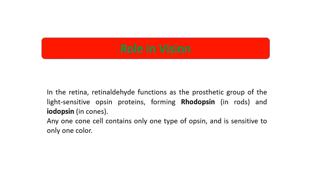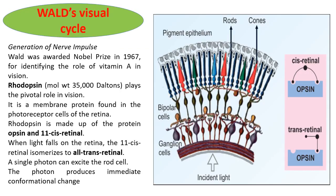Regarding vitamin A's role in vision: retinaldehyde functions as the prosthetic group of the protein opsin, which is a light-sensitive protein. Retinaldehyde and opsin form rhodopsin in the rods and iodopsin in the cones. The rhodopsin is present in the photoreceptor cells of the retina — it is composed of the protein opsin and 11-cis retinal.